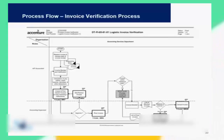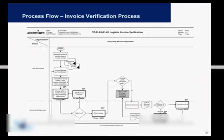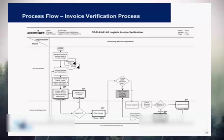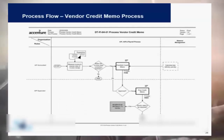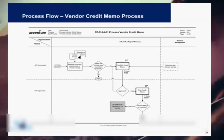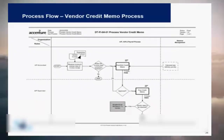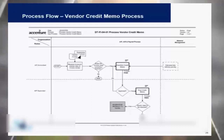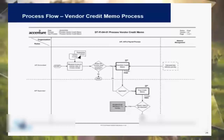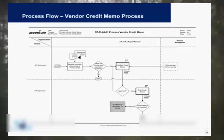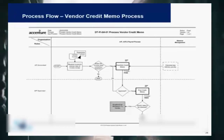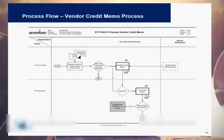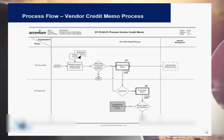The credit memo process works as follows: when you receive an invoice, you check whether it needs any correction or reversal. If yes, you park and create a credit memo. If this credit memo is approved by the supervisor, it is posted in the system. If you have any physical goods to return, you can do that, and once this is done the credit memo process ends.